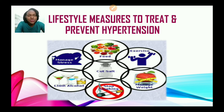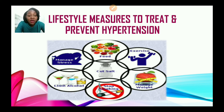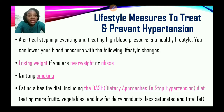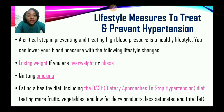Now let us look at lifestyle measures to treat and prevent hypertension. We look at stress management, the type of foods we intake, exercise and weight management, cutting down on salt, limiting alcohol, and stopping smoking. A critical step in preventing and treating high blood pressure is a healthy lifestyle. This includes losing weight if you're overweight or obese, quitting smoking, and eating a healthy diet including the DASH diet. The acronym DASH stands for Dietary Approaches to Stop Hypertension, which involves eating more fruits, vegetables, and low-fat dairy products, and less saturated and total fats.